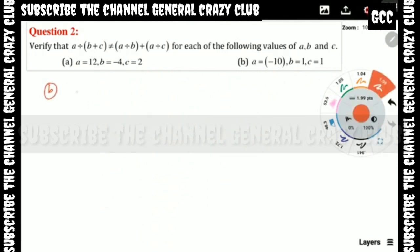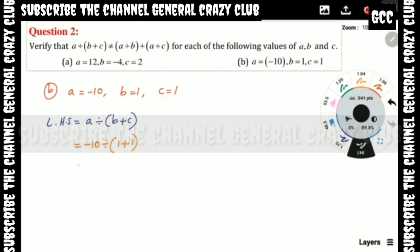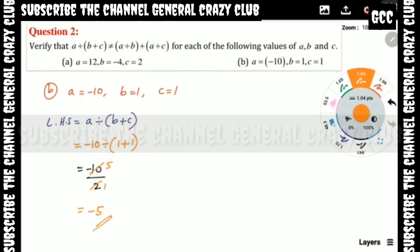Part B values: a = minus 10, b = 1, c = 1. Left-hand side = a divided by (b plus c) = minus 10 divided by (1 plus 1) = minus 10 divided by 2. Cancelling: 2 fives are 10, so the answer is minus 5.